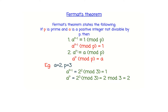Now, P is a prime number and A is a positive integer that is not divisible by P. First condition: A raised to P minus 1, mod P, is equal to 1.